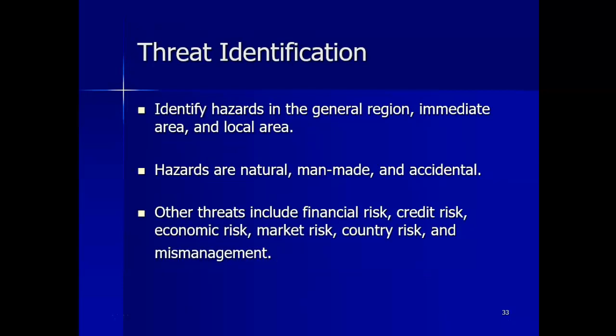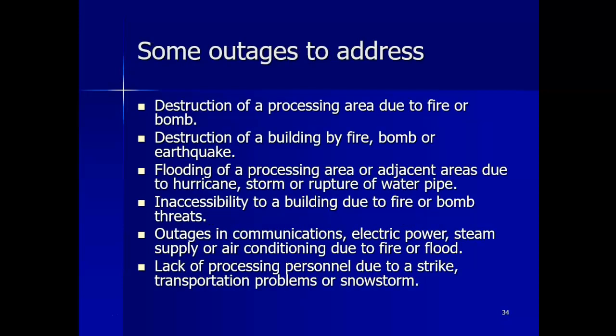When evaluating man-made, accidental, or non-natural threats, there are often a large number of variables involved. Information for man-made, accidental, or other threats tends to be less location-specific and more judgment is often required. The manifestation of a threat as a crisis may lead to a disruption, and identifying possible disruptions is helpful by drawing upon information gathered in the business impact analysis.